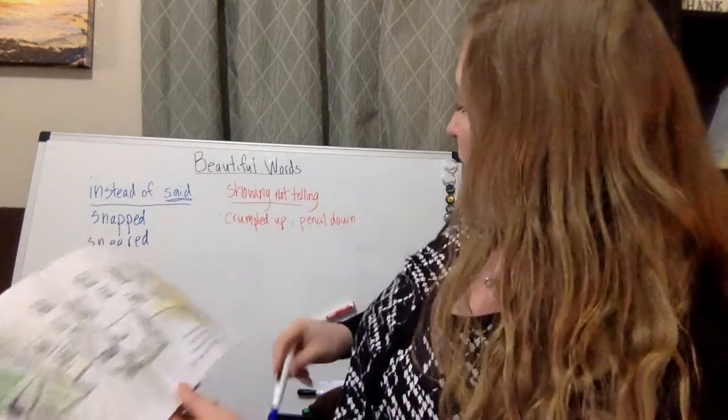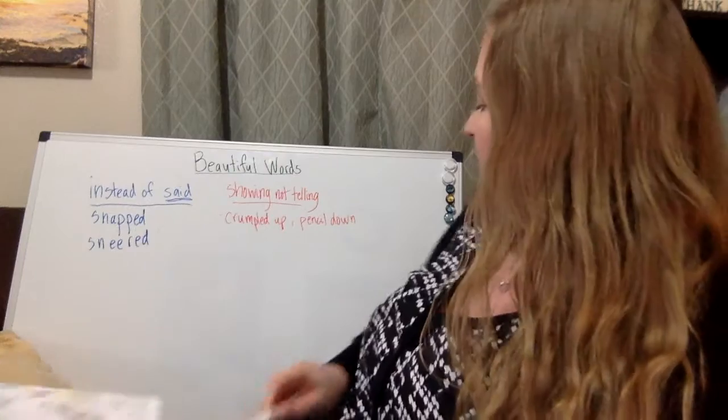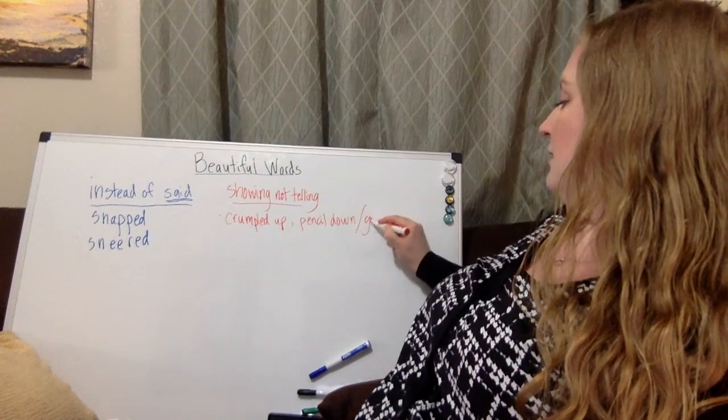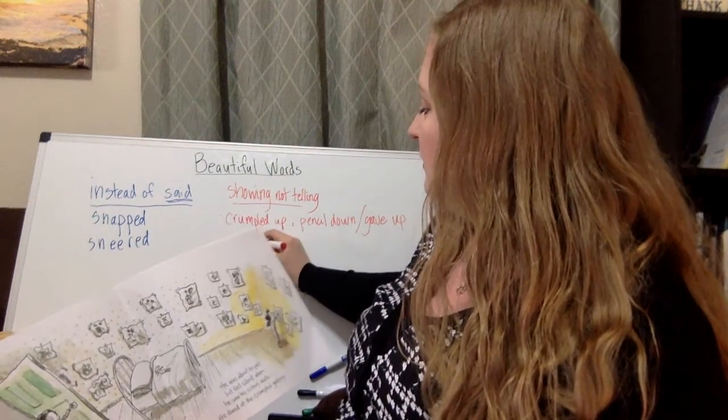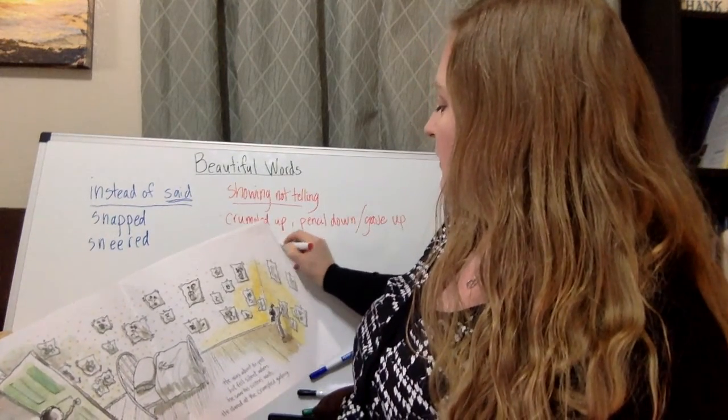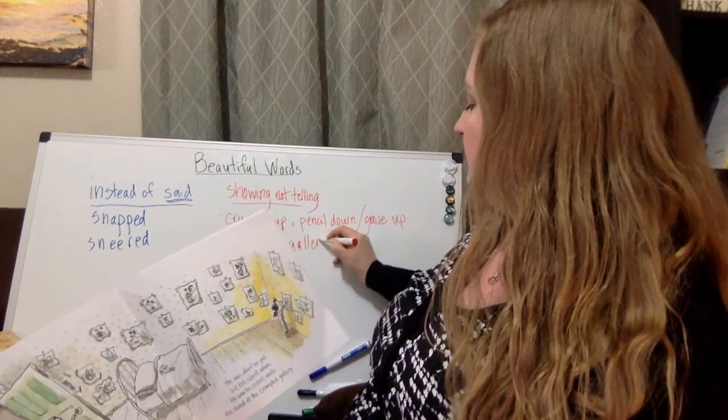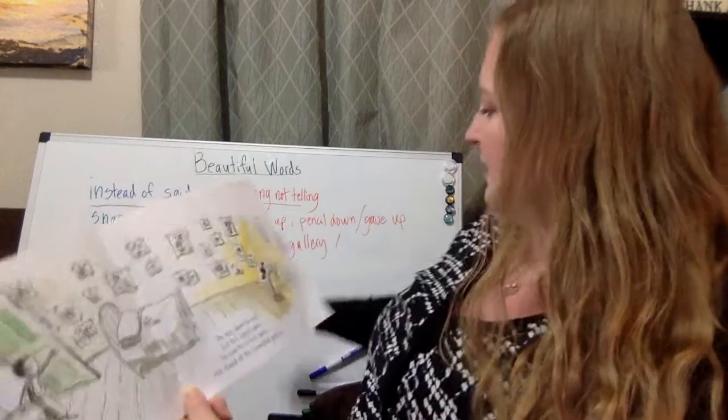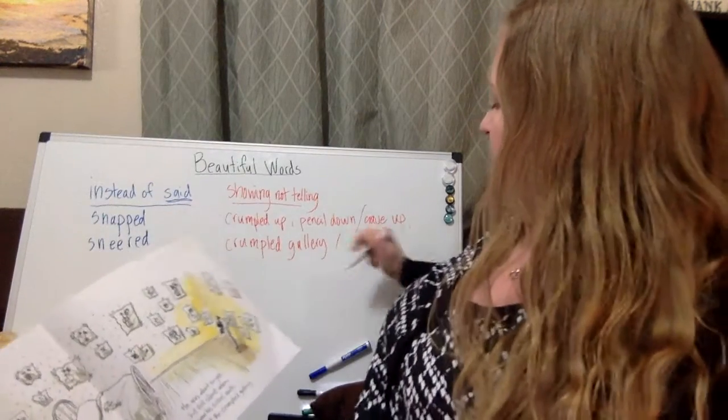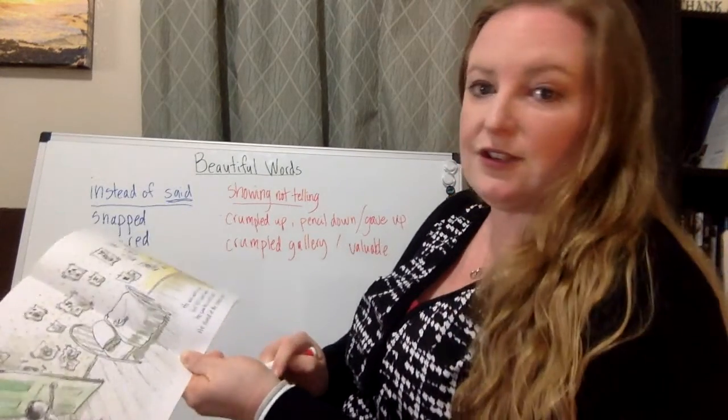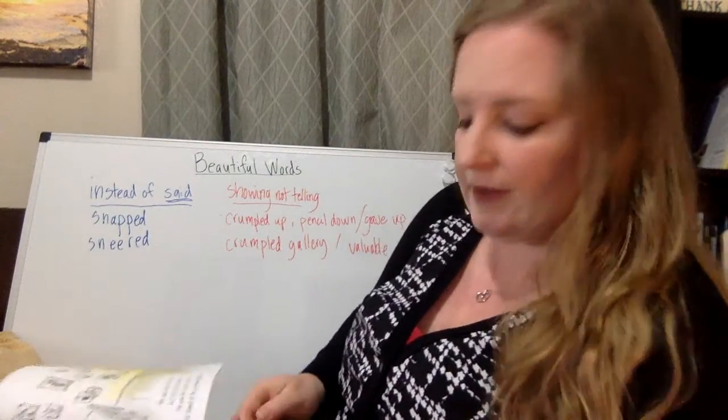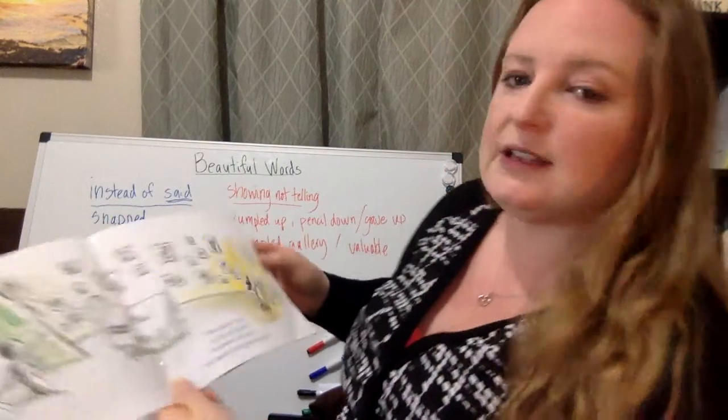So now what was crumpled up with his pencil down, which means he gave up, now it's a crumpled gallery. What does that tell you? A crumpled gallery. They've changed how it means and what it says. Crumpled gallery is now valuable. But Peter Reynolds didn't just say he gave up and she thinks it's valuable. He used words that really help you see it.